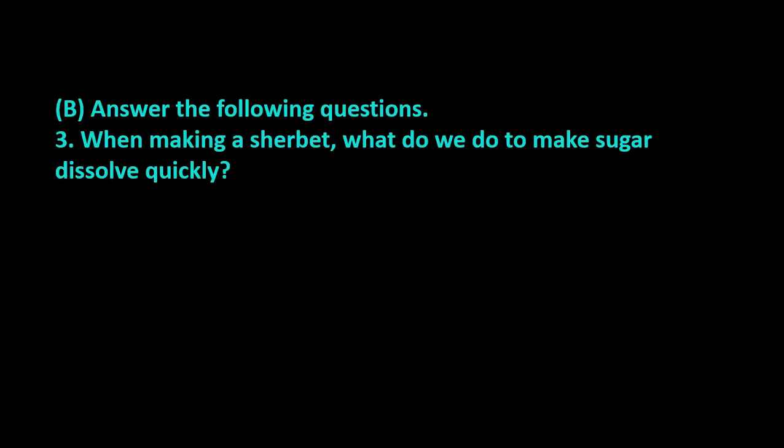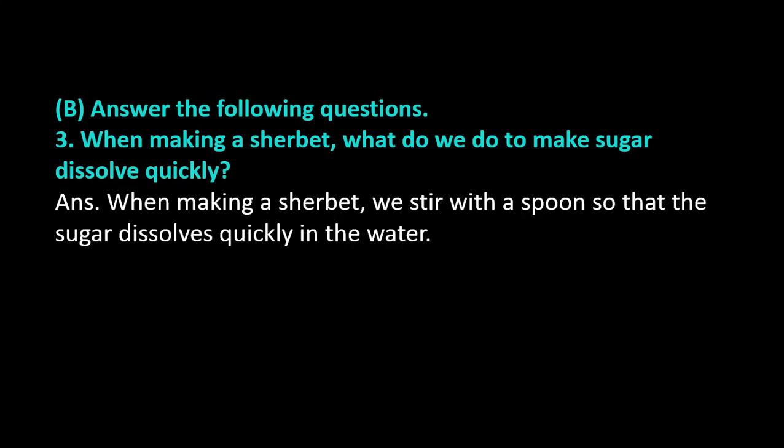Question number 3: When making a sherbet, what do we do to make sugar dissolve quickly? Answer: When making a sherbet, we stir with a spoon so that the sugar dissolves quickly in the water.